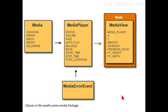The diagram shows boxes that represent the classes that reside in the javafx.scene.media package and the variables that each class includes. The boxes, drawn from top to bottom and left to right, are labeled MediaPlayer, MediaView, and MediaErrorEvent.